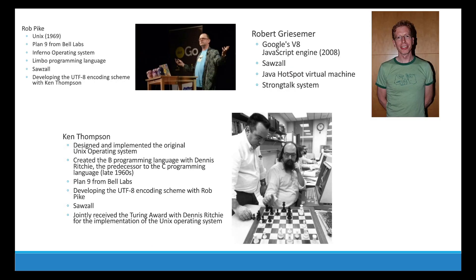Golang was created by three developers from Google: Rob Pike, Robert Griesemer, and Ken Thompson. Rob Pike worked on the Unix operating system — Linux is derived from Unix. He also worked on Plan 9, the Inferno operating system, the Limbo programming language, Sawzall, and developing the UTF encoding scheme with Ken Thompson, which grew in popularity to become the most used encoding scheme to this day.